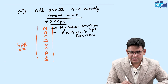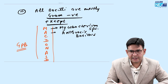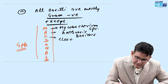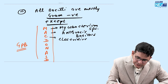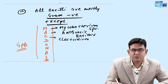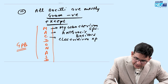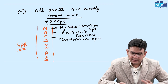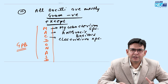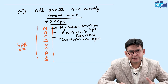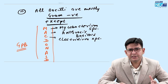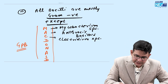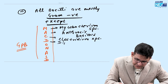A is Anthracis — Bacillus anthracis. C is Clostridium. Various species of Clostridium include Clostridium tetani, Clostridium botulinum, Clostridium difficile, and Clostridium perfringens. In exams, Clostridium perfringens has been asked — all these are very important.